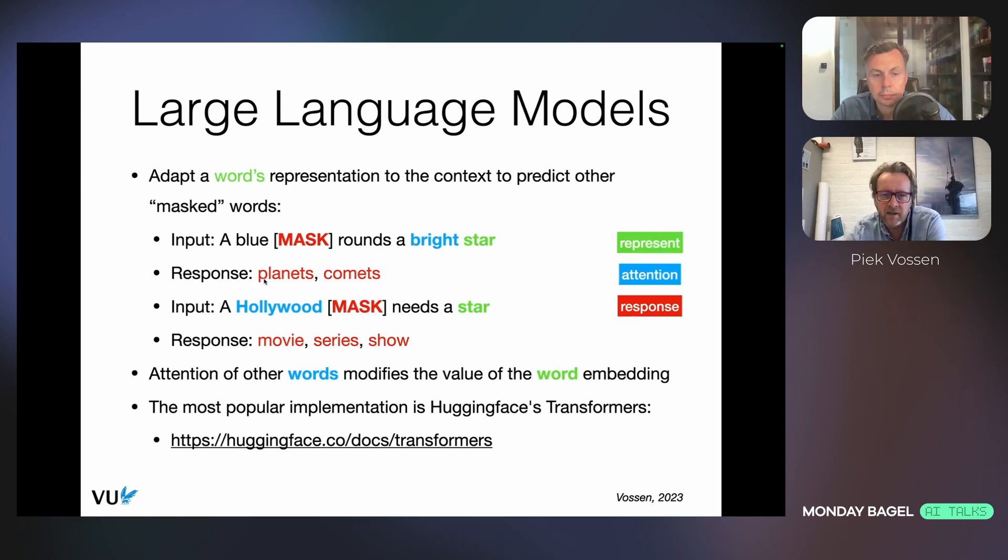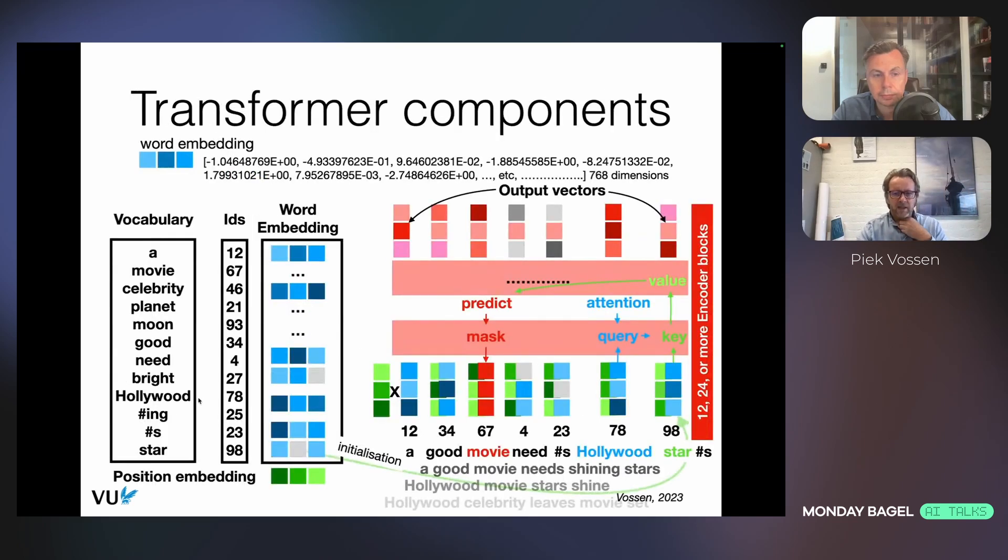Mask here would be a word that in this large language model, star needs to predict, just as it was predicting with word embedding. But now it gets help from another word like bright. Then it should predict planets and comets. But in this sentence, star needs to predict this word, which is a movie, and it gets help from Hollywood. So the attention, this is the famous paper 'Attention is All You Need,' the attention of the words in the sentence help moving star from, let's say, a wrong or compromised position in this space to the right position.